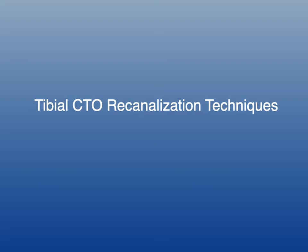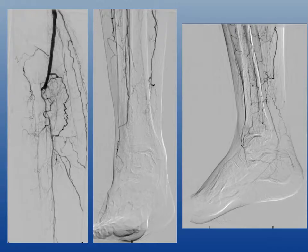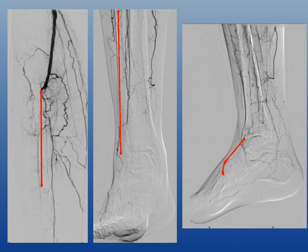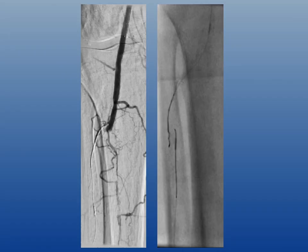Now I'll show a tibial CTO case and a few basic concepts on recanalization techniques. This CLI patient has severe occlusive disease below the knee and most likely below the ankle as well. My plan was to recanalize the anterior tibial artery, the pedal loop if needed, and then the TP trunk, and see what healing we could achieve based on a successful revascularization.